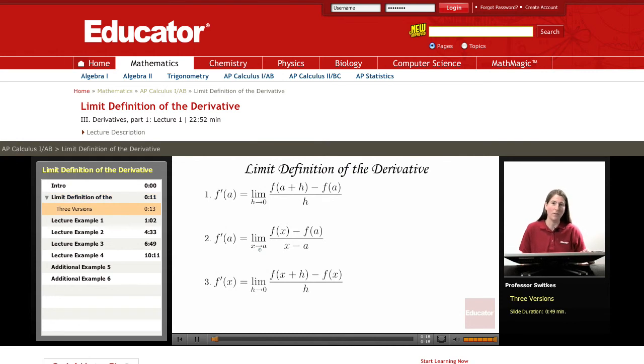Formulas 1 and 2 both give us the derivative evaluated at a point x equals a. So f'(a) can be computed as the limit as h approaches 0 of [f(a+h) - f(a)]/h. The same derivative, f'(a), can be evaluated as the limit as x approaches a of [f(x) - f(a)]/(x - a).